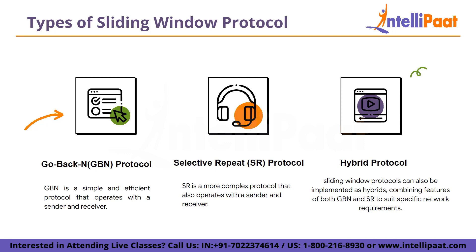Selective Repeat is a more complex protocol where the sender can transmit multiple frames before waiting for acknowledgments, just like GBN. However, the receiver individually acknowledges correctly received frames, not just the next one in sequence. If a frame is missing or corrupted, the receiver requests retransmission of only that specific frame rather than discarding subsequent ones. The sender retransmits only the requested frame. SR is advantageous when network conditions lead to occasional frame errors, reducing unnecessary retransmissions compared to GBN.